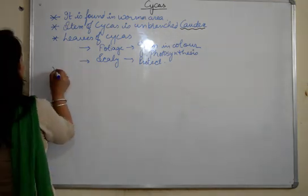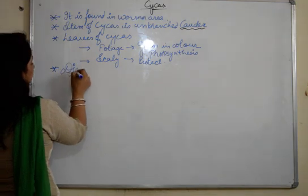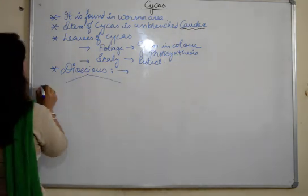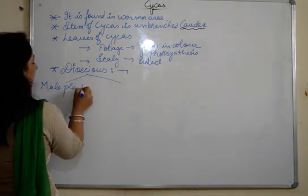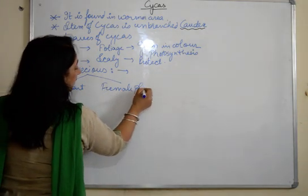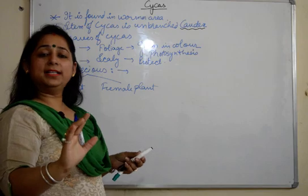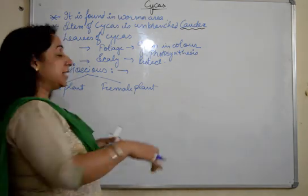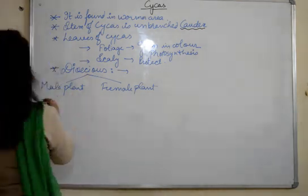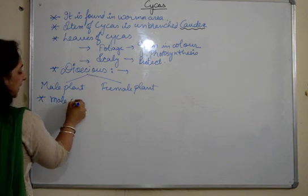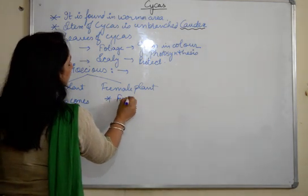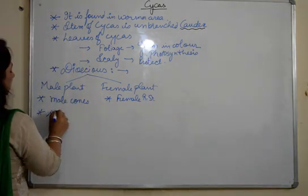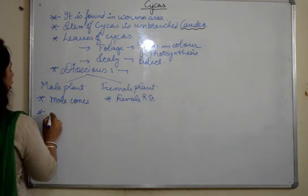Coming to the reproductive part: cycas is dioecious, meaning there is a separate male plant and a separate female plant. In pinus, there was only one plant which bore both female and male cones — it was monoecious. But here in cycas, it is dioecious, so there are two different plants — male plant and female plant. The male plant forms and bears the male cones, and the male reproductive structure is a cone.